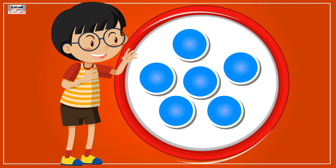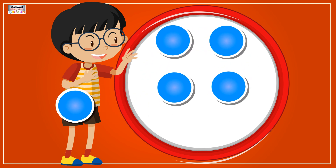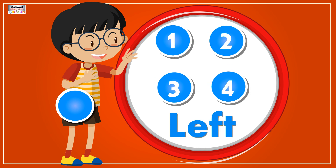Out of 6 circles, if 2 are taken away, then only 4 are left.